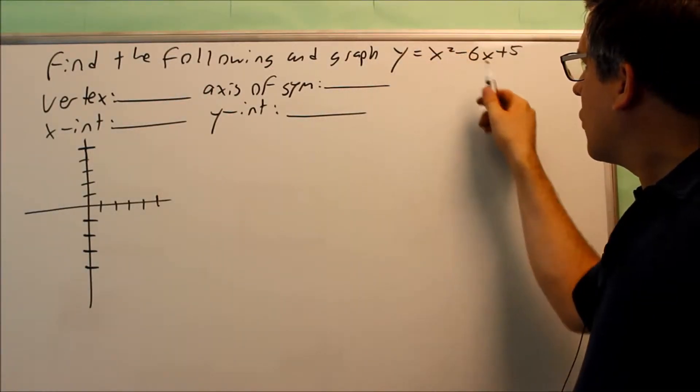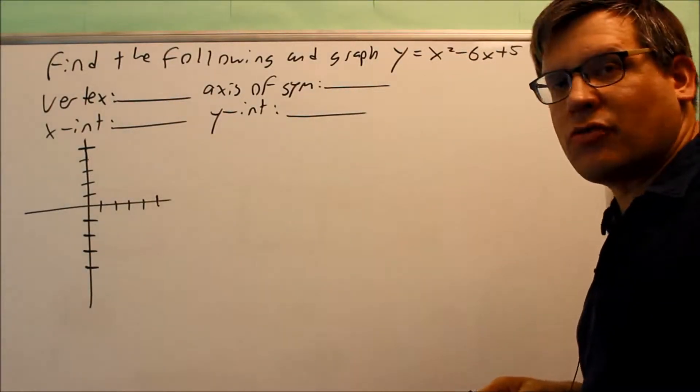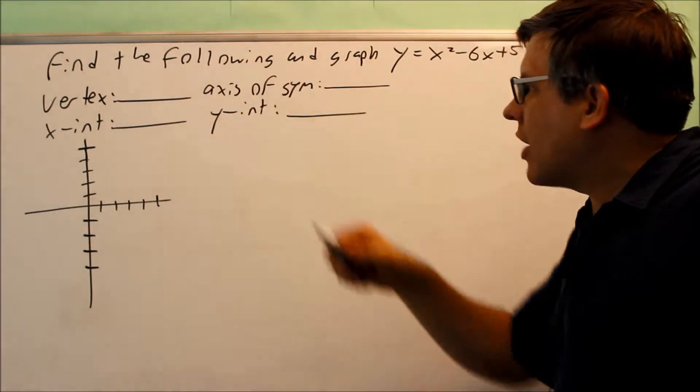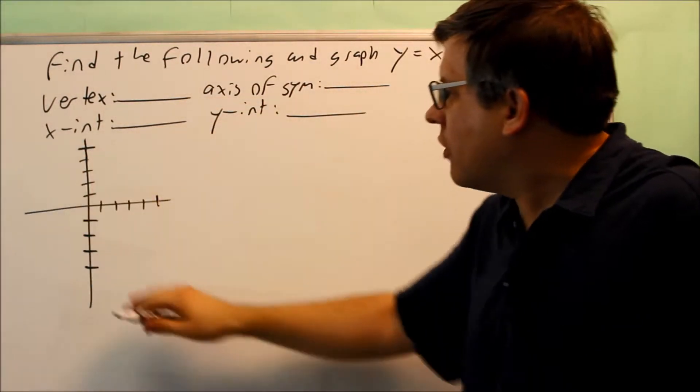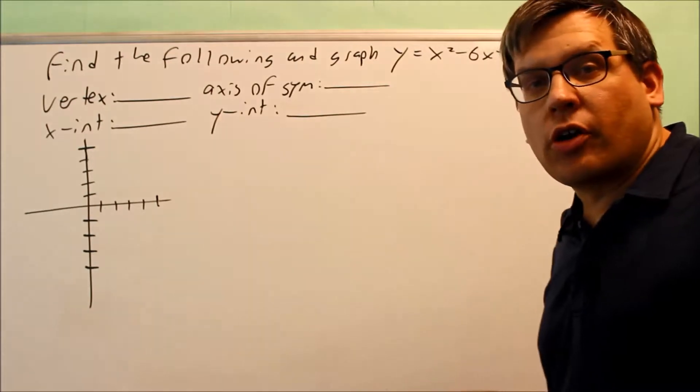We're going to find the following. We're going to graph this one, x squared minus 6x plus 5. Here's the information you're asking us to find, and then we'll take that information, plot it, and we'll be able to get our graph.